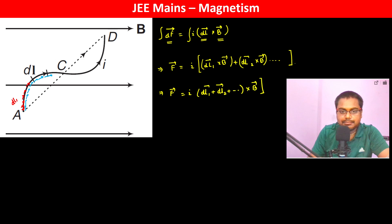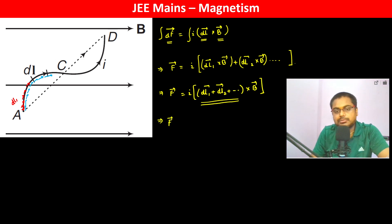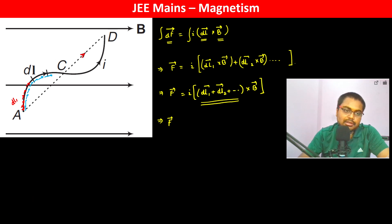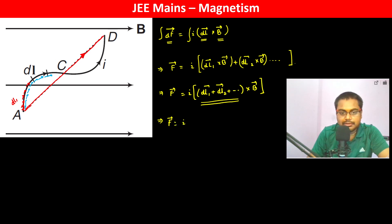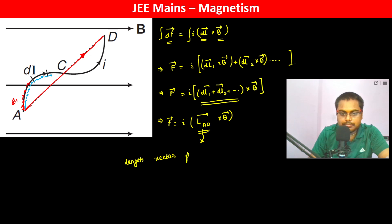This entire sum of elemental lengths actually becomes the displacement vector — that is, the vector from point A to point D. All the elemental vectors together give the net displacement vector from the initial to the final position of the conductor.